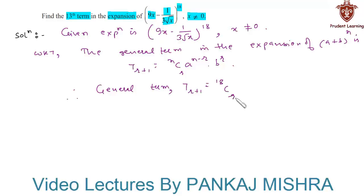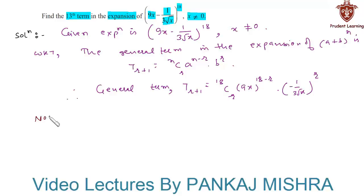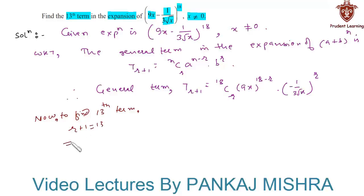18 C r into (9x) whole raise to (18 minus r) into (minus 1 upon 3 root x) whole raise to r. Now to find the 13th term, we must have r plus 1 equal to 13, which gives us r equals 12.